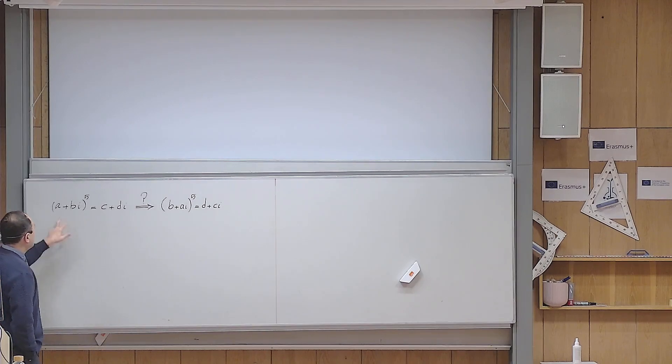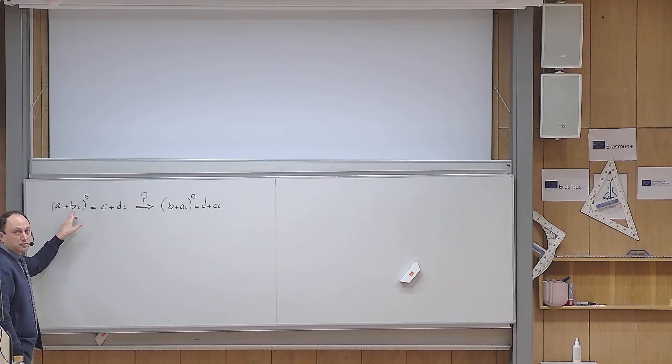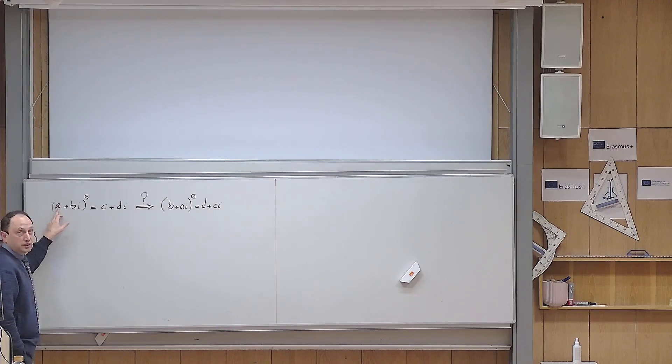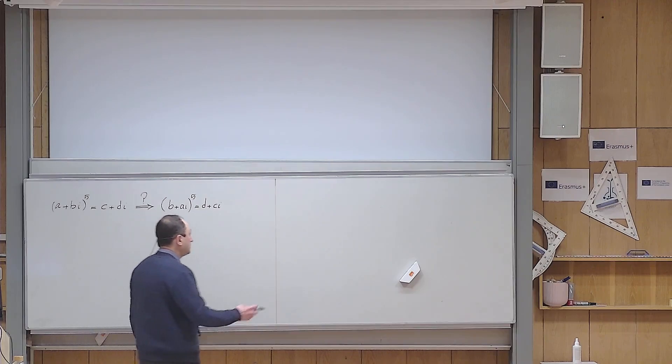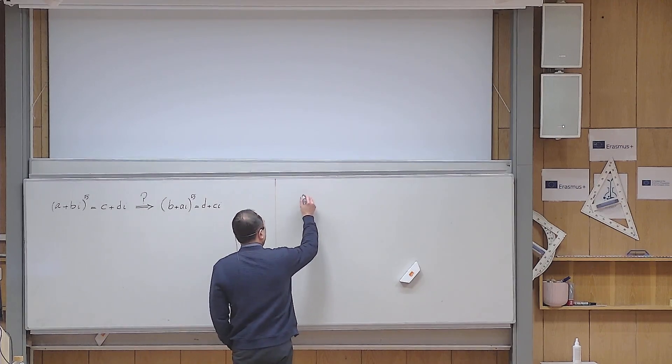Of course the trick is not just thinking about flipping a and b, it's flipping i from its position next to b to a position next to a. So that is the trick, and it uses this fact that if I have 1 over i,